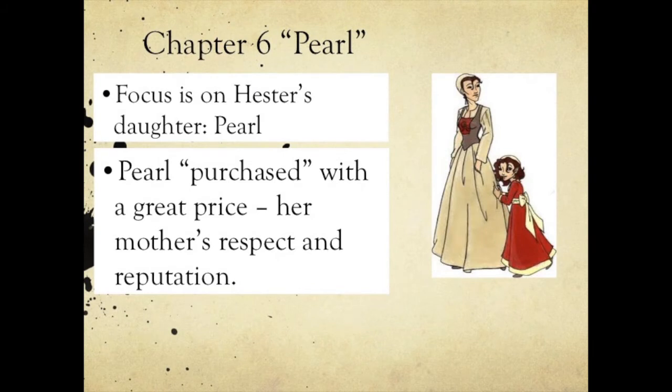Chapter 6 is called Pearl. Pearl is Hester's daughter that we met as a baby at the beginning of the book. But in Chapter 6 she finally has a personality — she becomes a real person and is given a name.